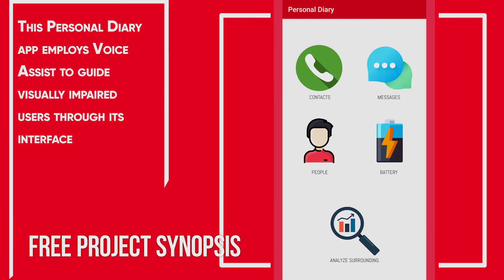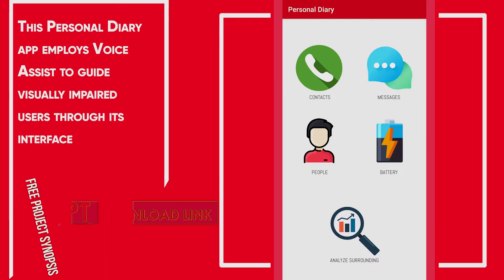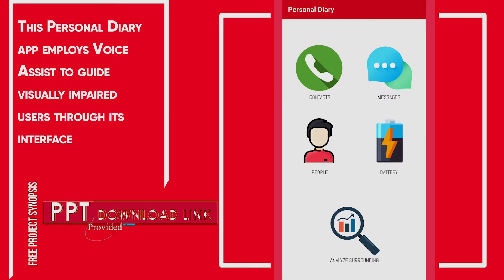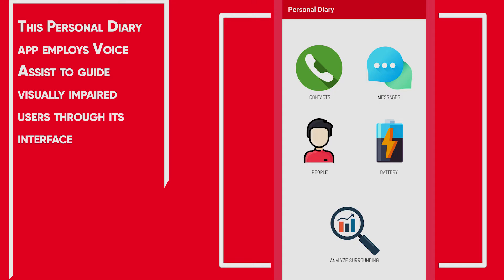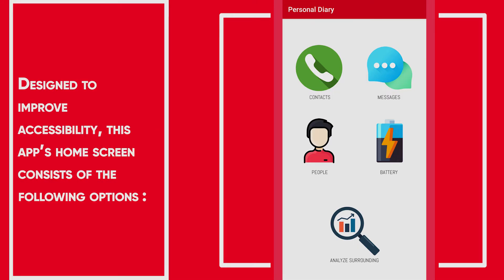This personal diary app employs voice assist to guide visually impaired users through its interface. To use the personal diary app, click any side of the screen to use the respective feature. Designed to improve accessibility, this app's home screen consists of the following options.